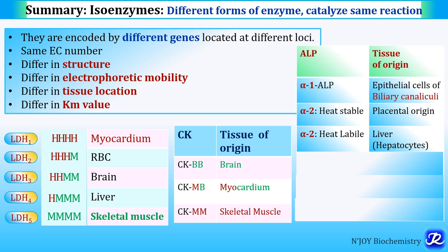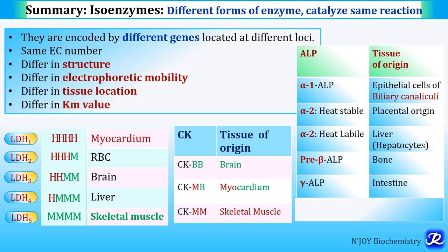Pre-beta (B for bone) alkaline phosphatase is physiologically increased in children by 2 to 3 times normal due to increased osteoblastic activity, but in conditions like Paget's disease, osteomalacia, rickets, and bone cancer, the increase can be up to 10 to 25 times the normal reference range.